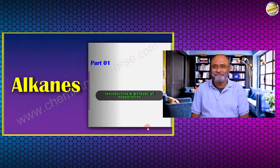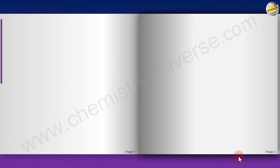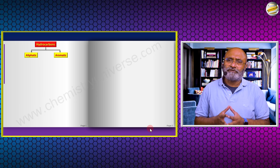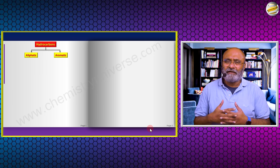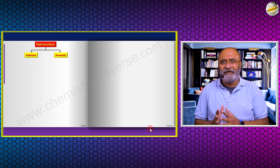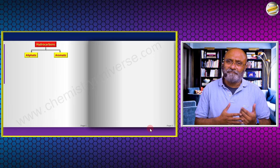Alkanes part one — introduction and methods of preparation. Hydrocarbons can be divided into two broad categories: aliphatic and aromatic. From GOC you already know what aromatic means; all compounds that are not aromatic or anti-aromatic are called aliphatic. Aromatic compounds are cyclic with 4n+2 pi electrons; the rest are aliphatic or non-aromatic.